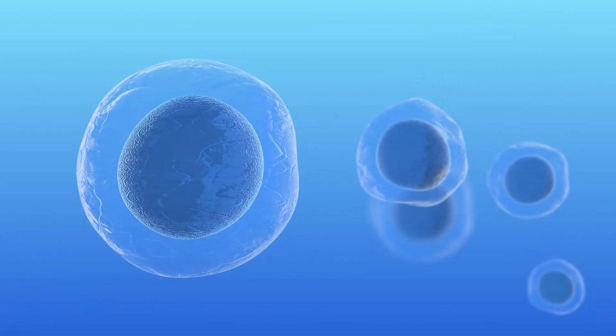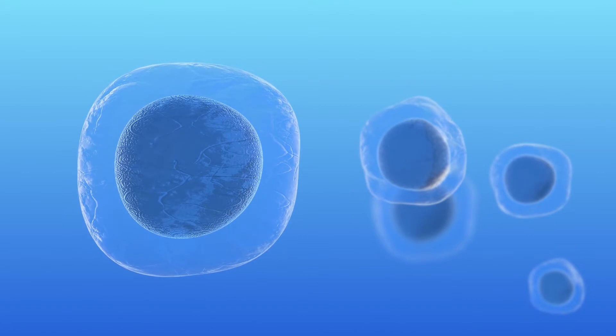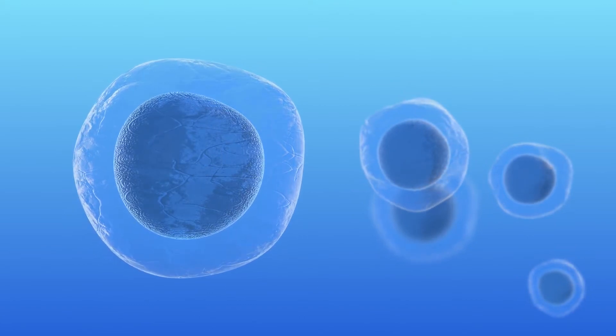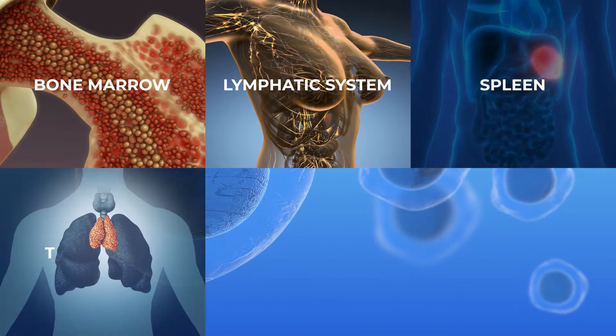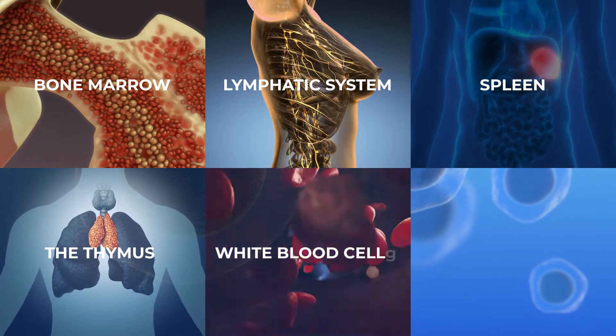The cells of both parts of the immune system are made in various organs of the body including bone marrow, the lymphatic system, your spleen, the thymus, white blood cells and antibodies.